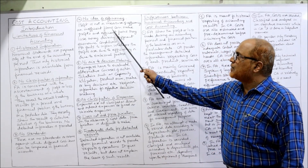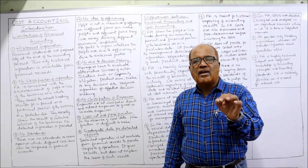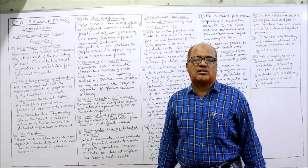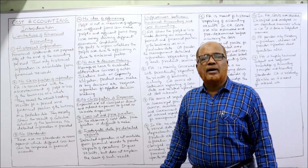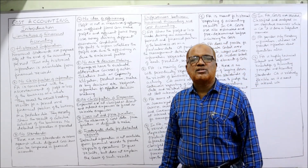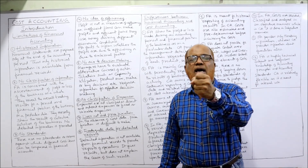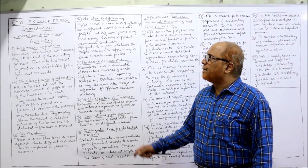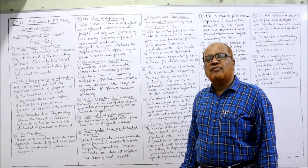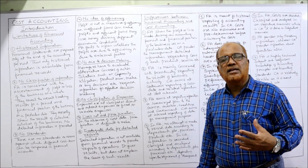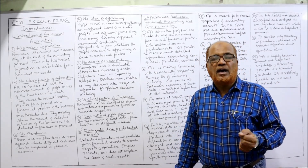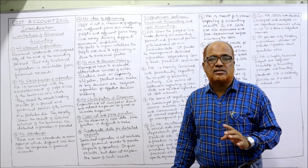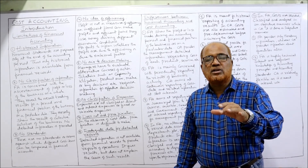The fourth limitation is no idea of efficiency. In financial accounting we cannot measure the efficiency of different resources used in the business — for example, labor or material. We cannot measure how efficiently the business is utilizing labor, machinery, or capital. Profit is not a measure of efficiency; a business can be inefficient yet earn more profit, or be efficient yet earn less profit, due to external factors.